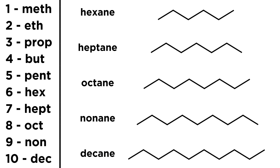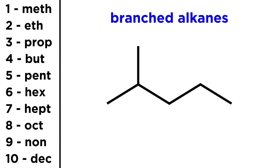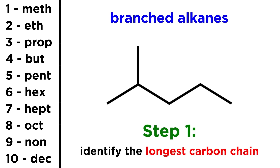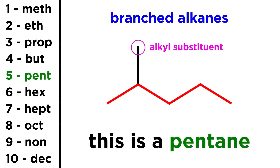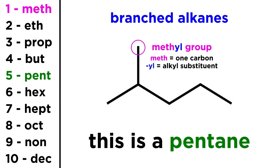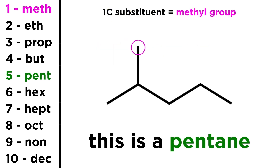Now let's see what happens as we slowly add complexity to the molecular structure. Let's take this branched alkane. The first thing we must do is identify the longest carbon chain. Here it's easy — we have a 5-carbon chain and this 1-carbon alkyl substituent, which means a 1-carbon group projecting from the main chain. Since the main chain has 5 carbons, this is a pentane, but we can't just call it pentane — we have to communicate the presence of this additional carbon. Since it is a 1-carbon alkyl substituent, we take the prefix meth and suffix "-yl", from alkyl, and we call this a methyl group — not a methane group, because methane is a discrete molecule. This is just a part of a molecule, so it's a methyl group.